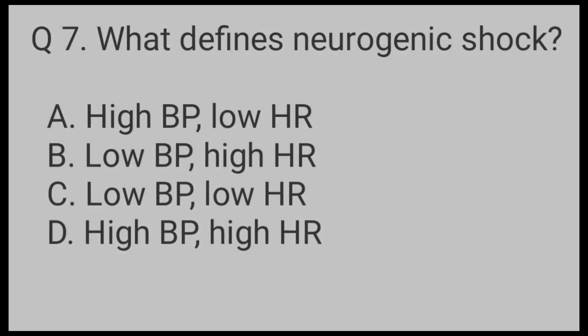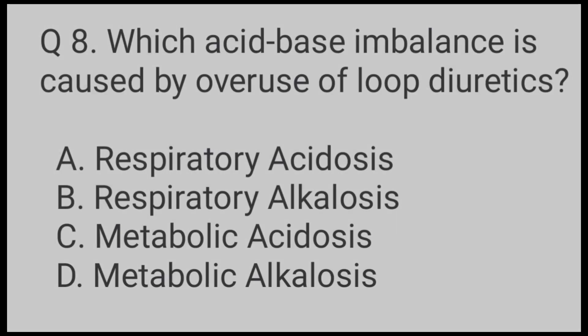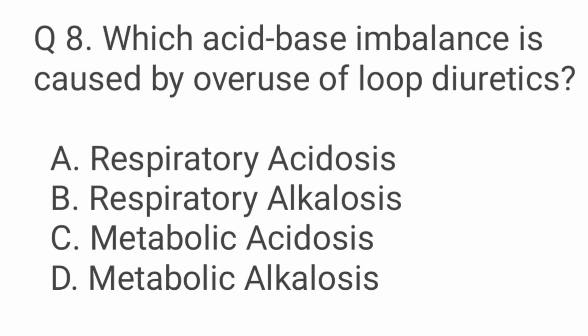Question 7: What defines neurogenic shock? Correct option is C: Low BP, Low HR. Question 8: Which acid-base imbalance is caused by overuse of loop diuretics?